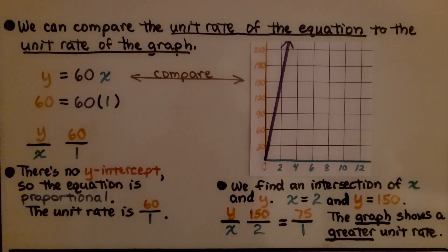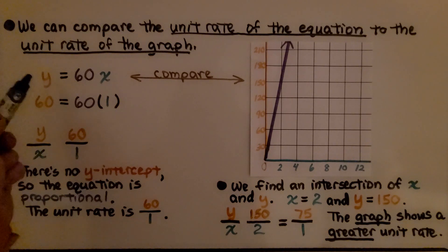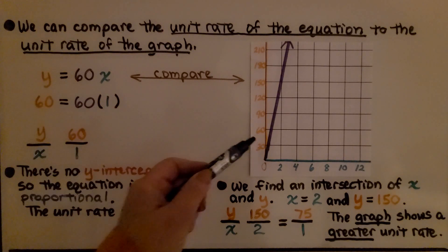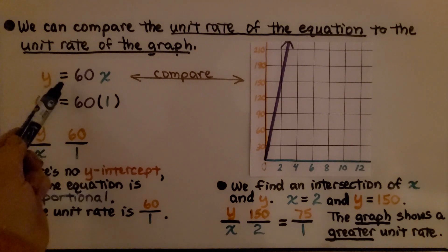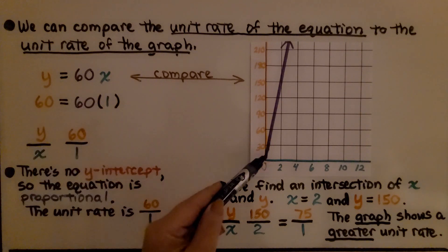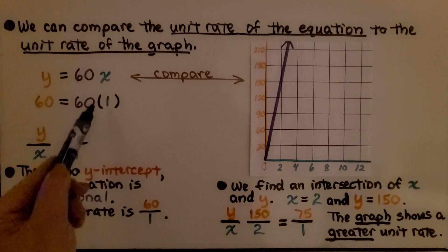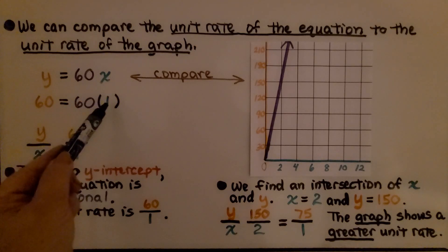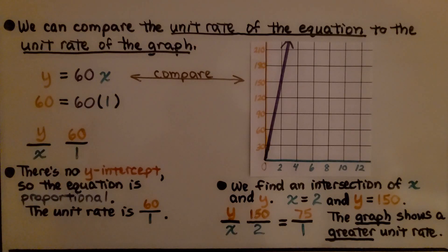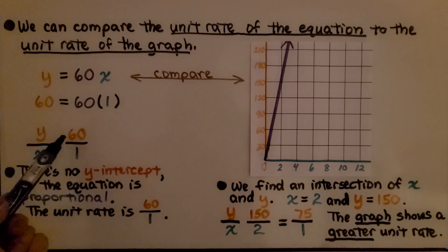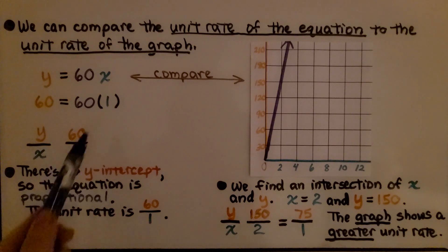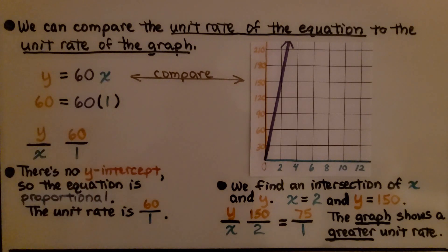We can compare the unit rate of the equation to the unit rate of the graph. We're going to compare y = 60x to this graph. If we substitute 1 for x, we have 60 times 1, y = 60. Our y to x is 60 to 1. There's no y-intercept, there's no b in this equation, so the equation is proportional. That means it's 0 for b. The unit rate is 60 for 1 unit.